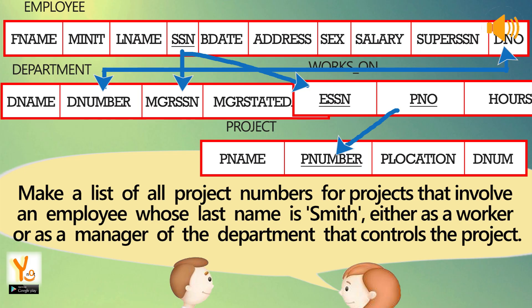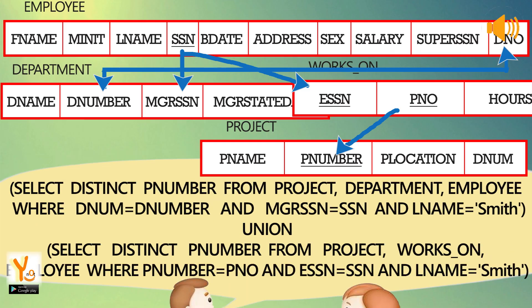Make a list of all project numbers for projects that involve an employee whose last name is Smith, either as a worker or as a manager of the department that controls the project. SELECT DISTINCT Pnumber FROM project, department, employee WHERE Dnumber = Dnumber AND MGRSSN = SSN AND Lname = 'Smith'.